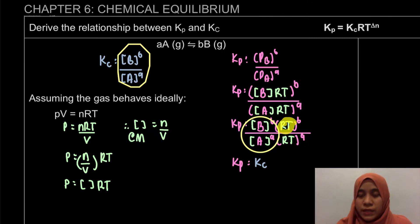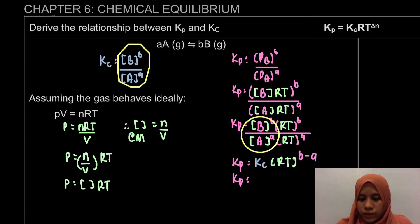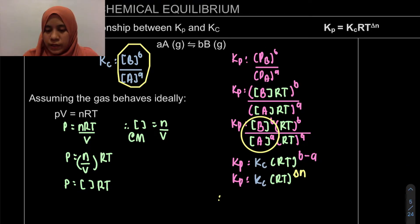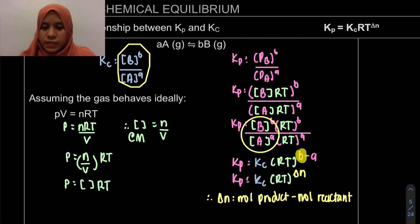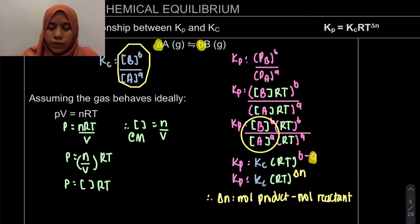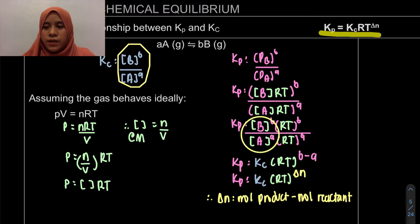The remaining RT terms come out as RT to the power of (b minus a). We can denote this as Kp equals Kc times RT to the power of delta N, where delta N is moles of product minus moles of reactant — that is, the stoichiometric coefficients of products minus reactants.